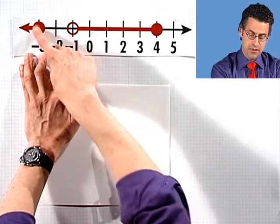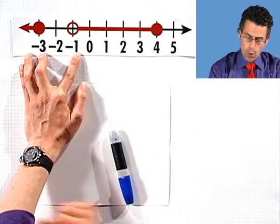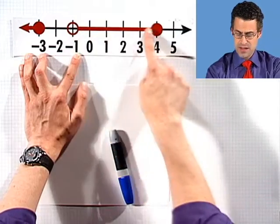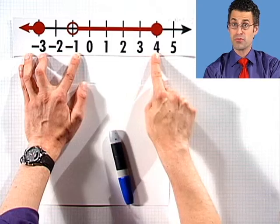And since the circle is colored in, I'm allowed to include negative three. Or you can gain candidacy into the set by being somewhere in here. Anything bigger than negative one all the way up through and including the number four.